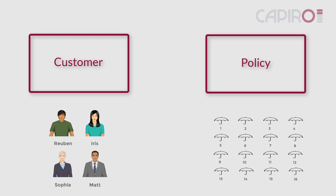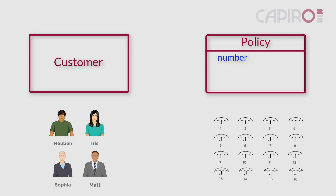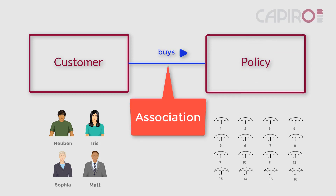Theo tells the analysts that each policy has a unique number. Again, the model just shows 'number,' not the actual number of any one policy. Every policy also has other attributes, such as policy type, purchase date, and price. Theo has mentioned that customers buy policies. This type of adornment is called an association.